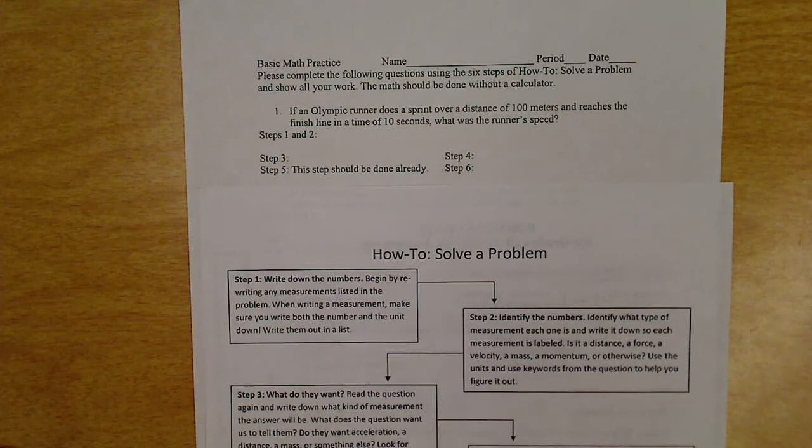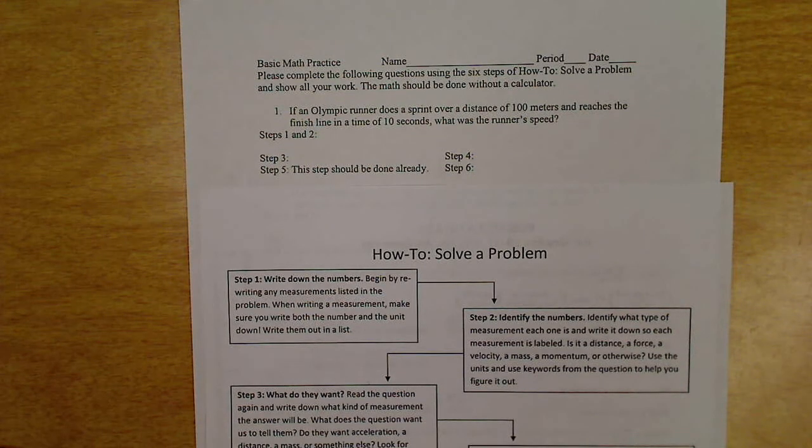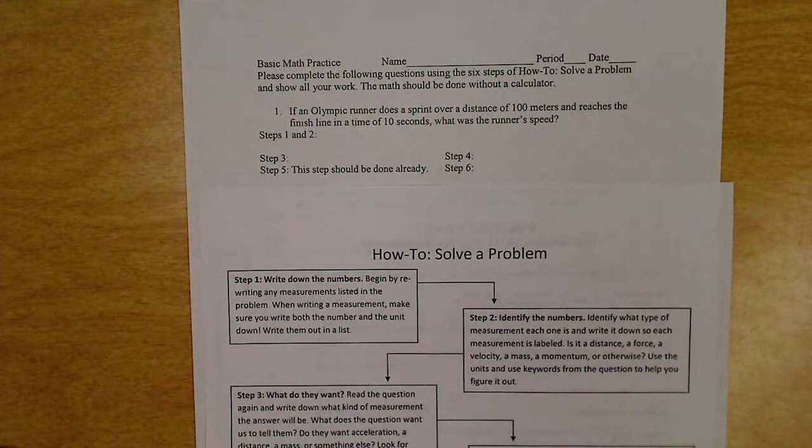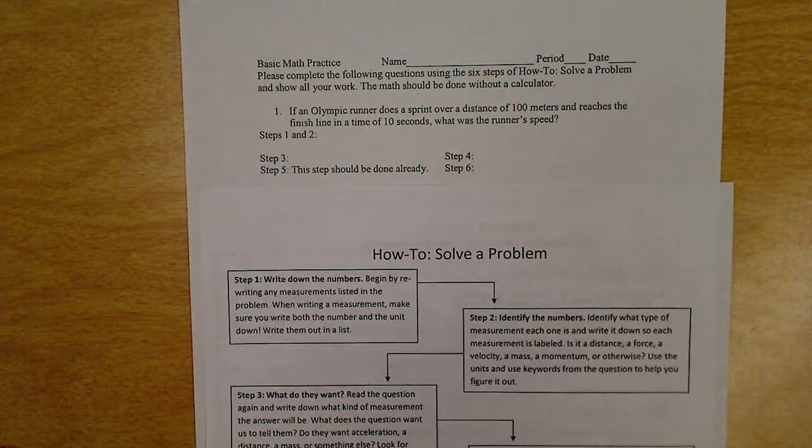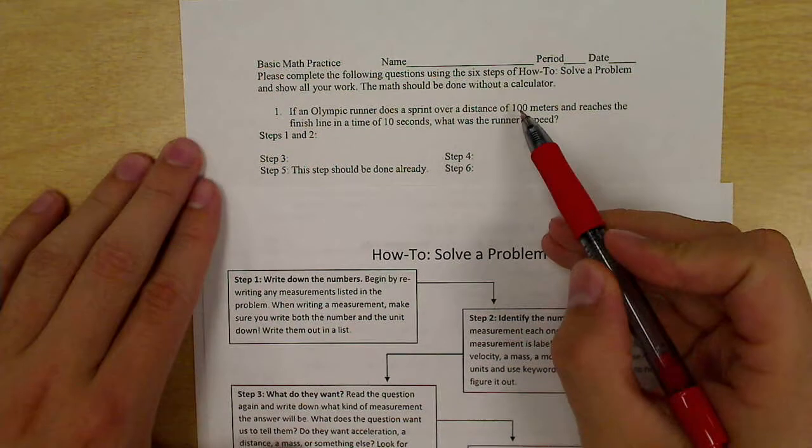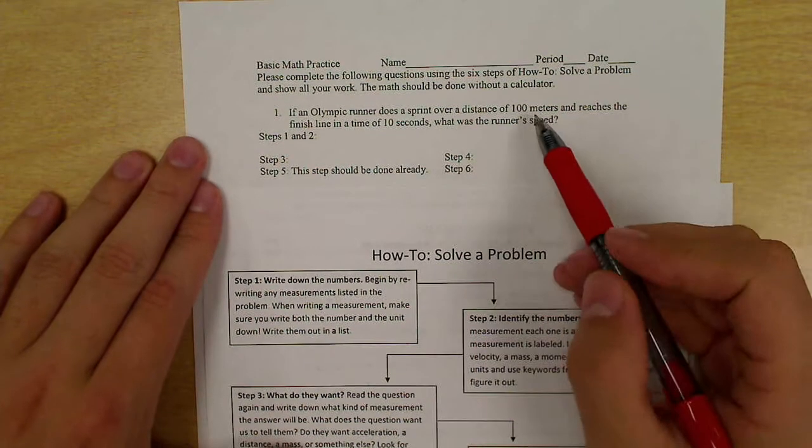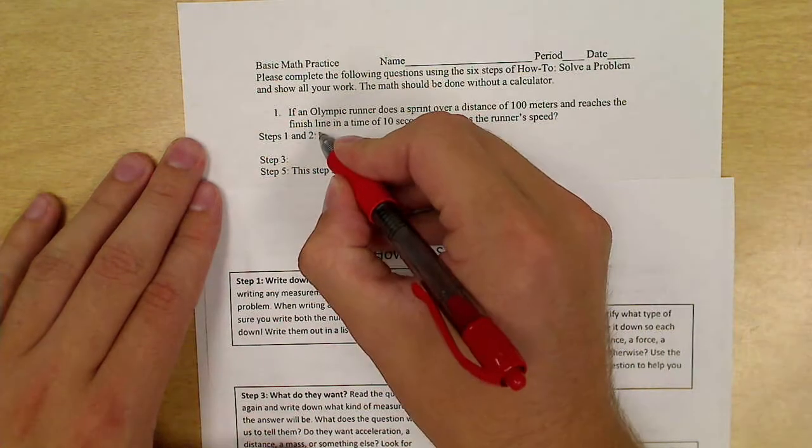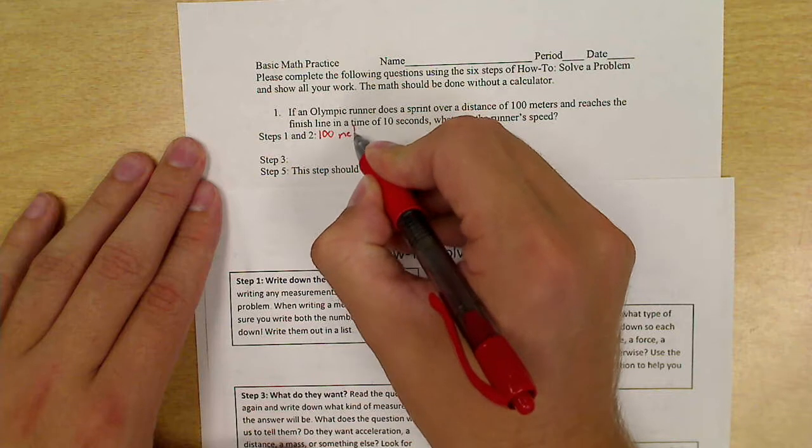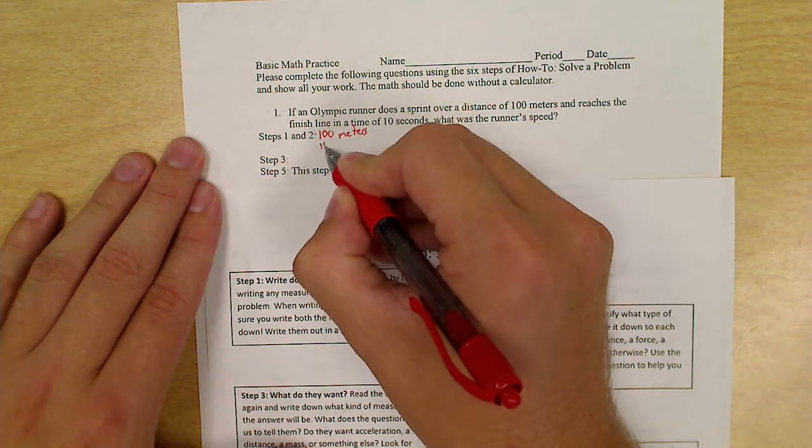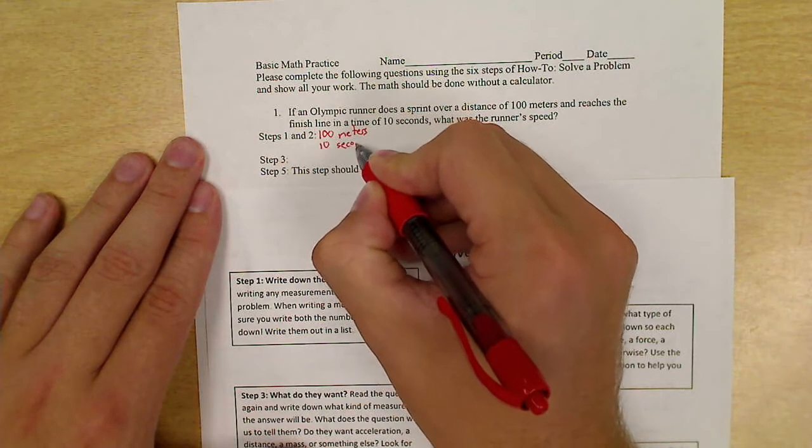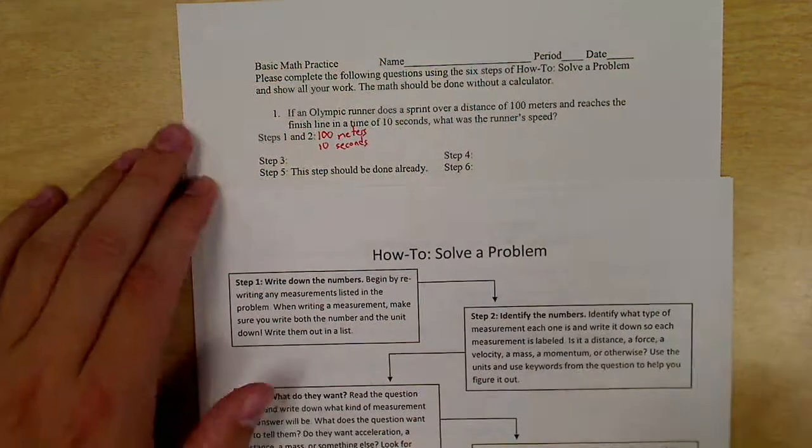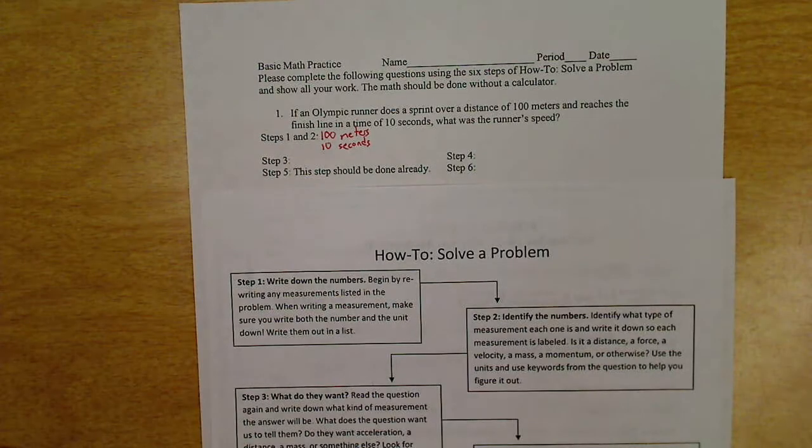So what that means is I have a sample problem here. Our problem is if an Olympic runner does a sprint over a distance of 100 meters and reaches the finish line at a time of 10 seconds, what was the runner's speed. Now this is a really easy step. So all I'm going to do is I see two numbers: 100 meters, 10 seconds. So I'm just going to write those down. Some of you might be thinking that a shortcut would be just to underline them. You will be better served by writing them down. I'll talk about that why in a minute.